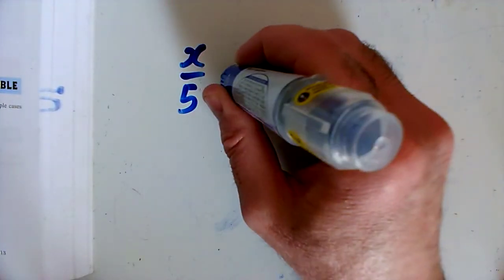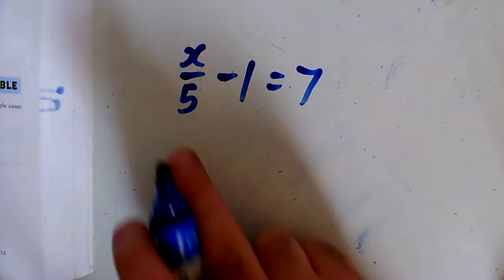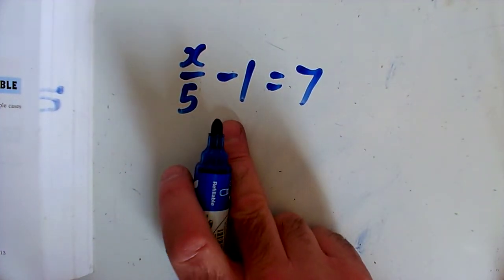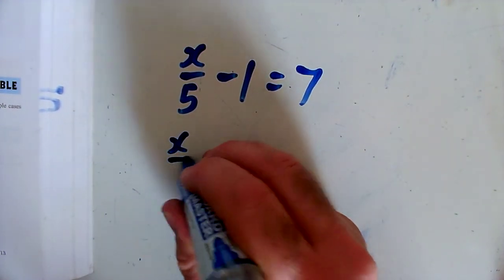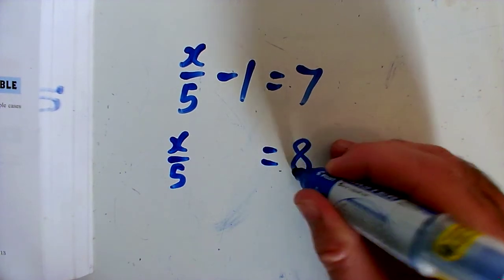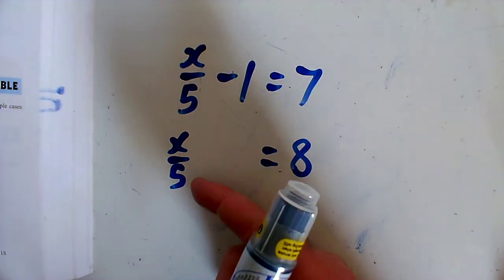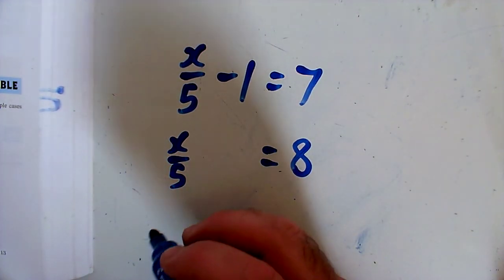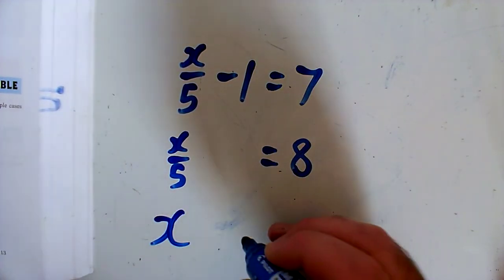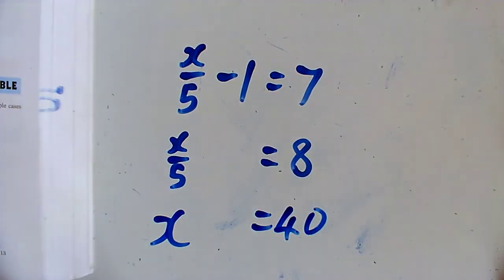Question R, the final question: x over 5 minus 1 equals 7. I want the bit with x on its own, so adding 1 to both sides, x over 5 equals 8. I don't want x over 5 — I want a whole x — so multiplying everything by 5 gives x equals 40.